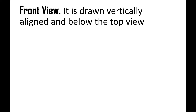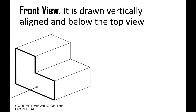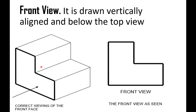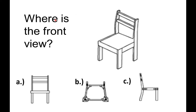Let's proceed to the front view. Front view is drawn vertically aligned and below the top view. So in this object, this represents the front view. Let us answer: where is the front view of this chair — letter A, B, or C? If your answer is letter A, you are correct. This one represents the front view of this chair.